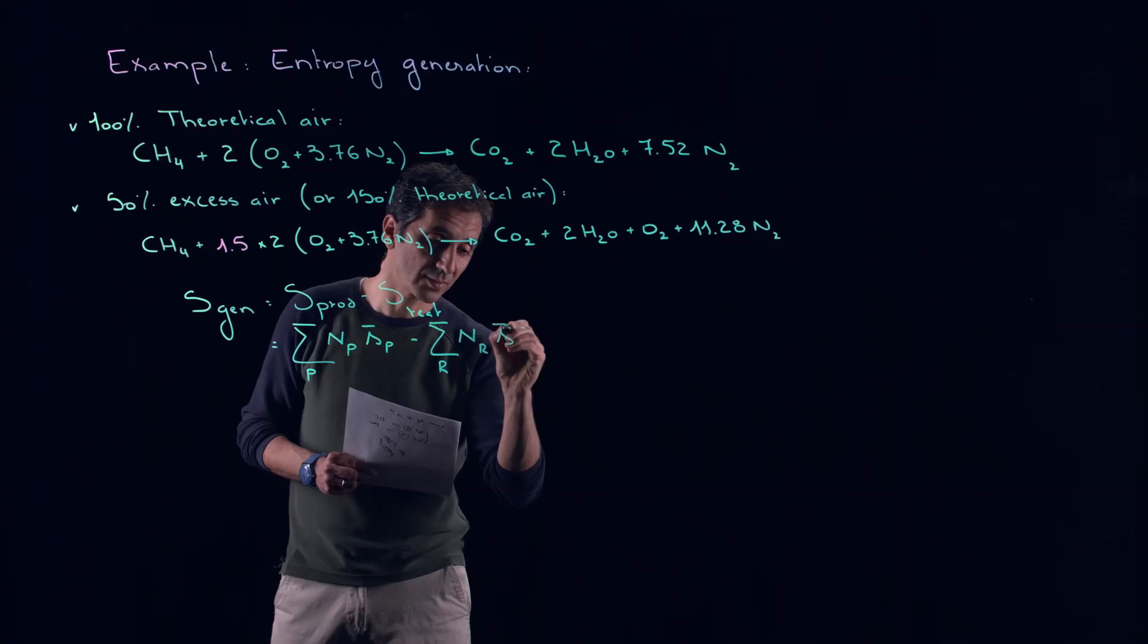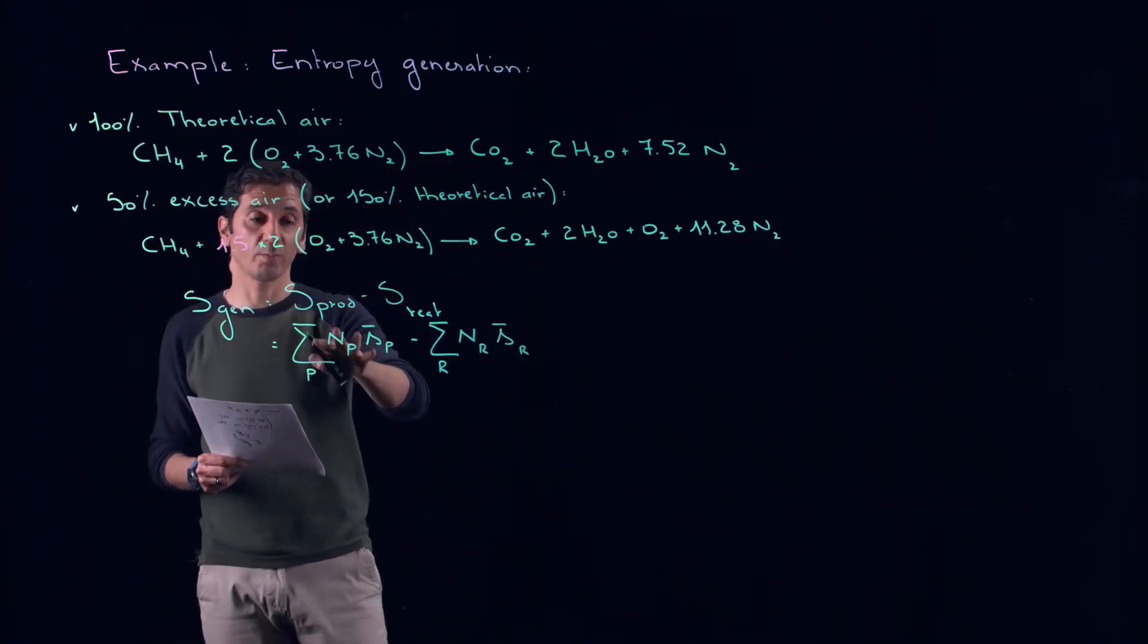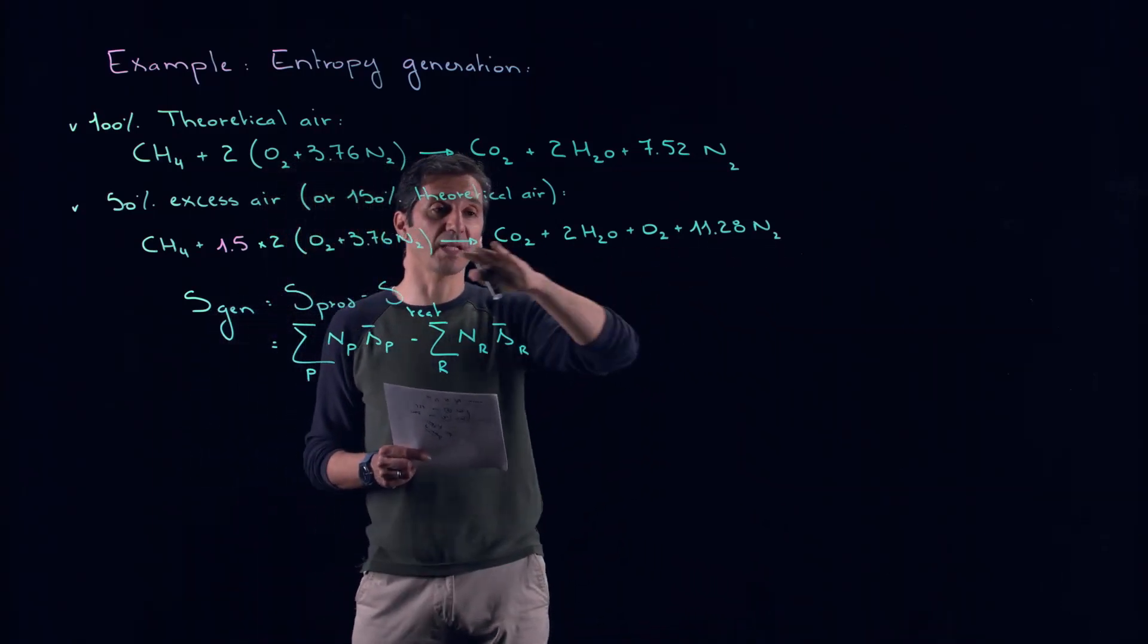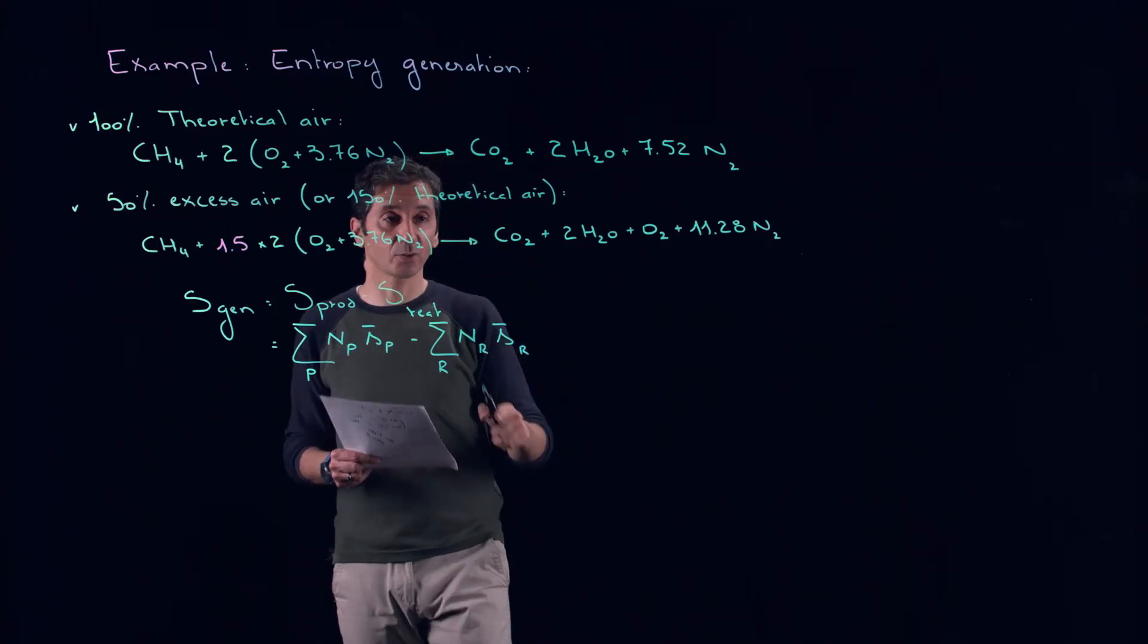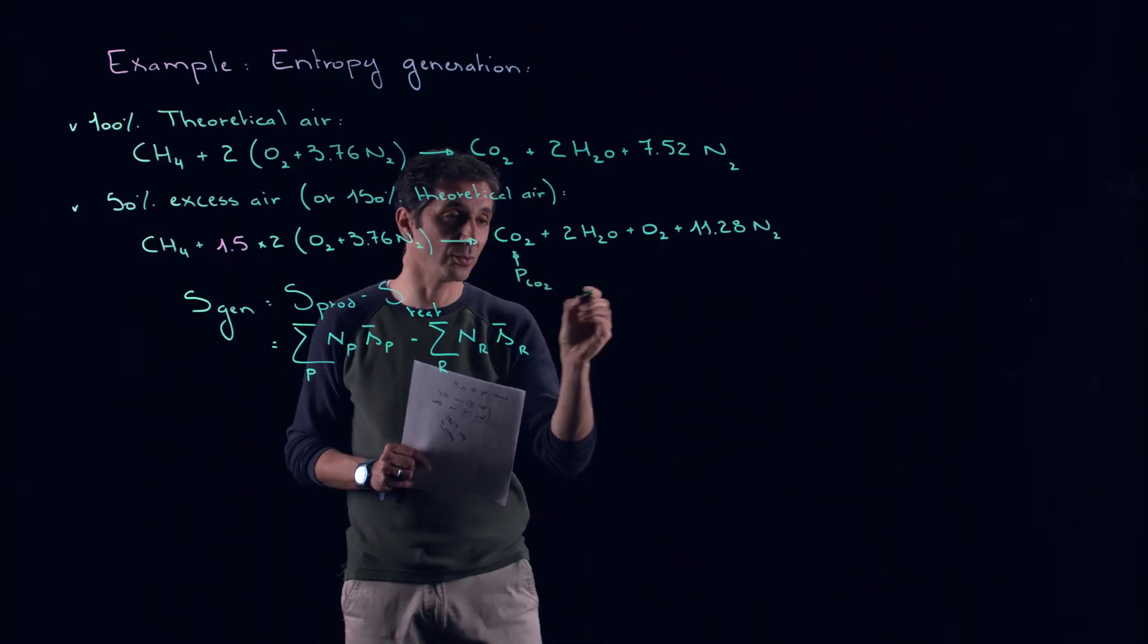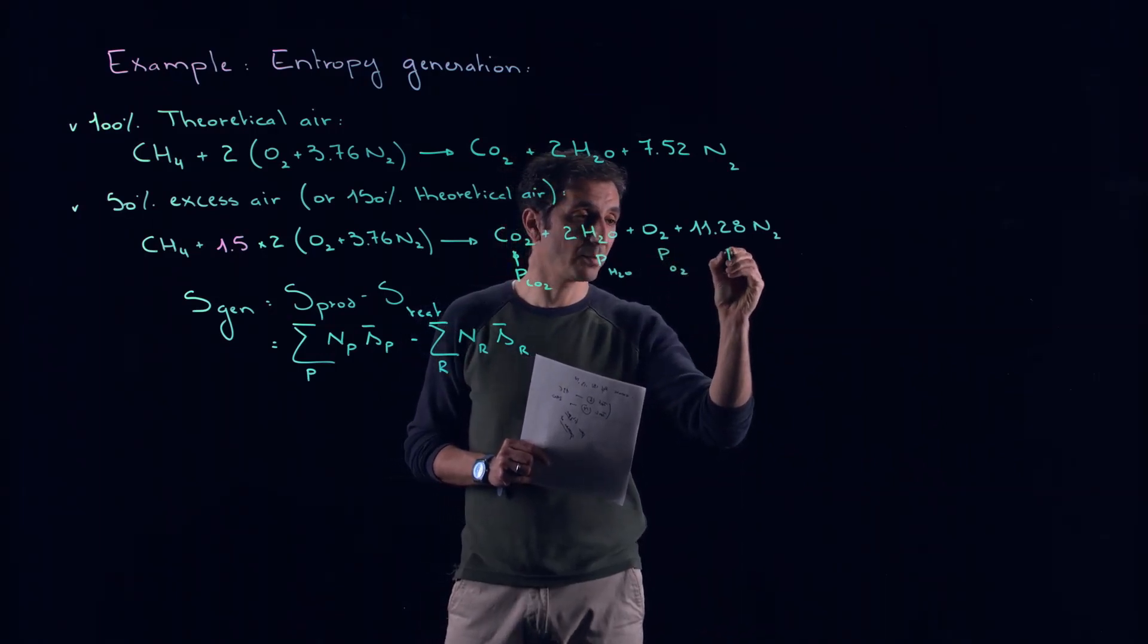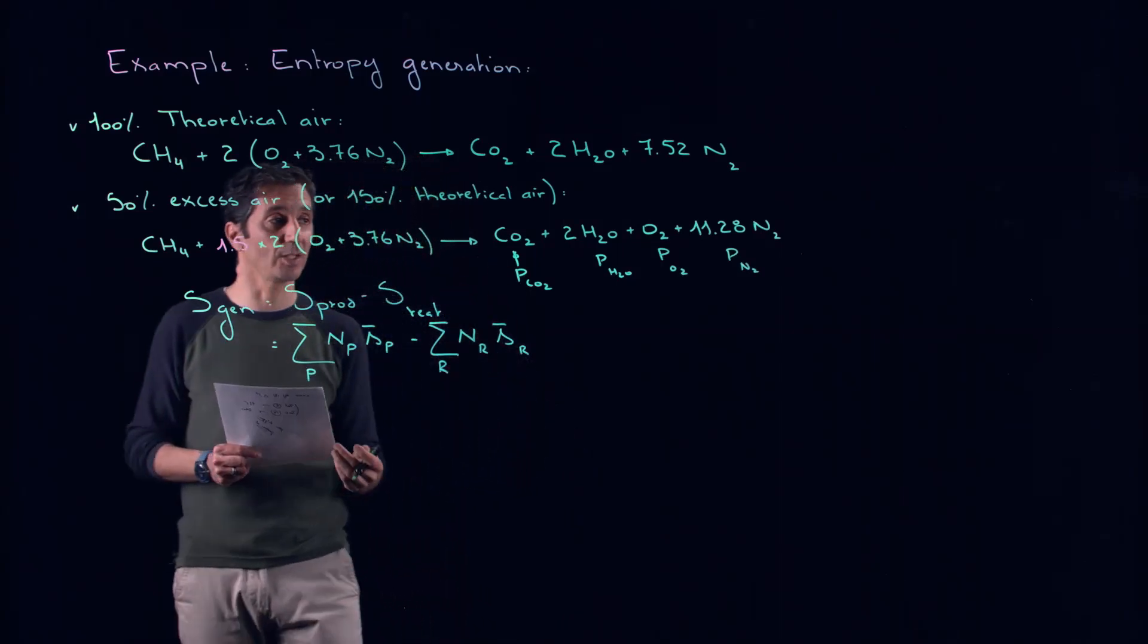Now, since we are talking about products and reactants, we are typically talking here about a mixture of gases. Therefore, the entropy has to be calculated at the partial pressure of CO2, the partial pressure of H2O, the partial pressure of O2, and the partial pressure of N2, and not at the total pressure for us which is here one atmosphere.